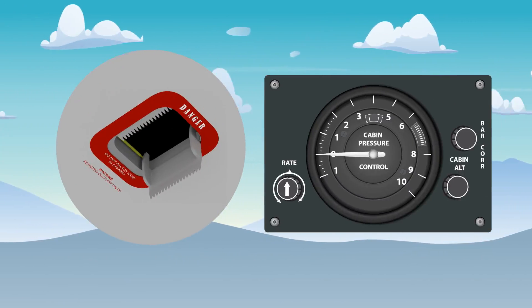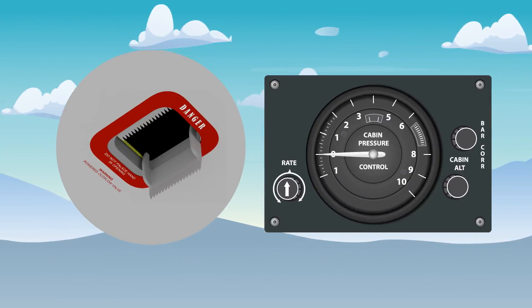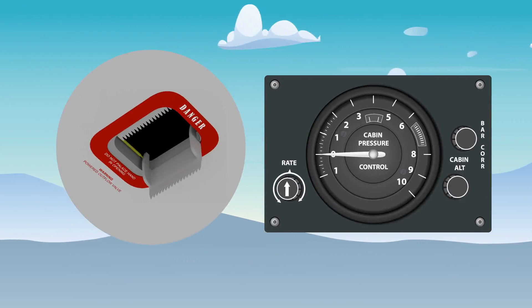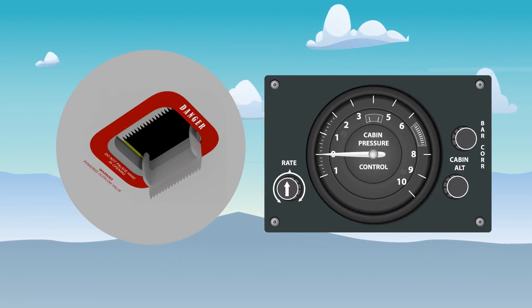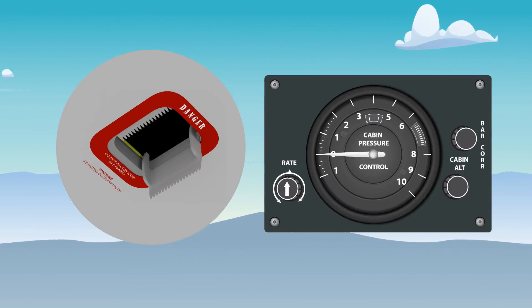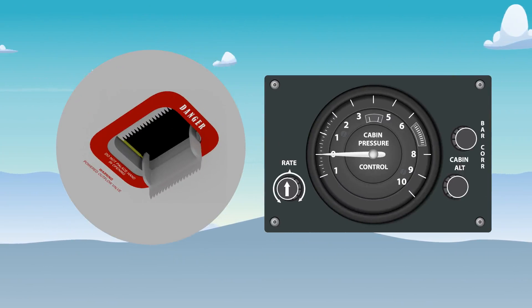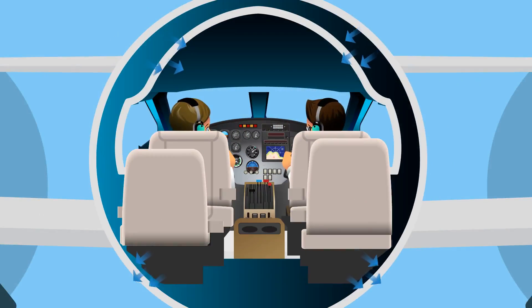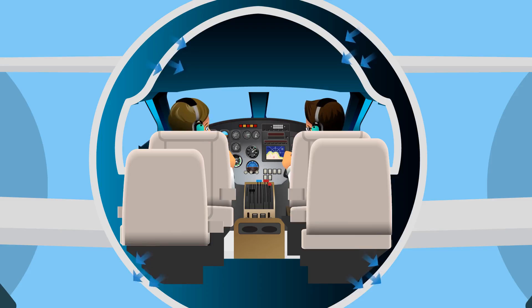The outflow valve is controlled by a pressure regulator to help maintain a constant cabin pressure. By regulating the air exit, the outflow valve also allows for a constant inflow of air to the pressurised area, which helps to remove stale air and eliminate odours.